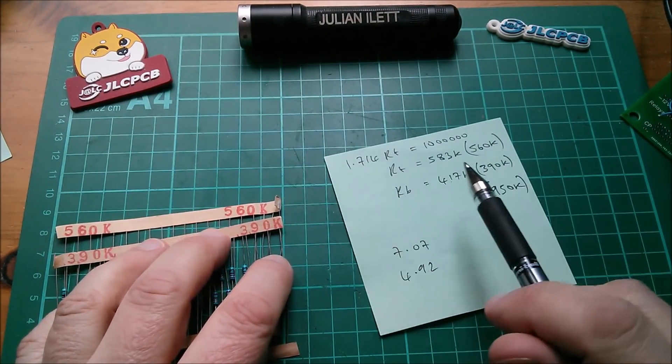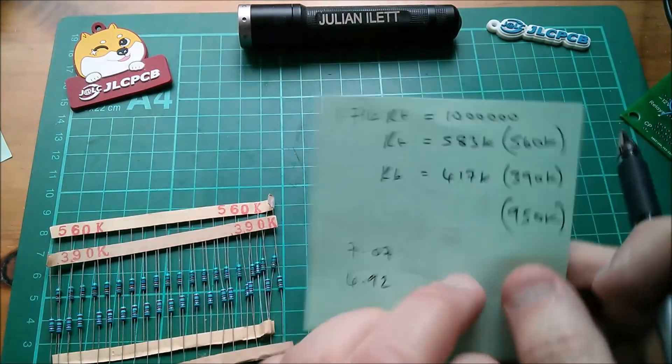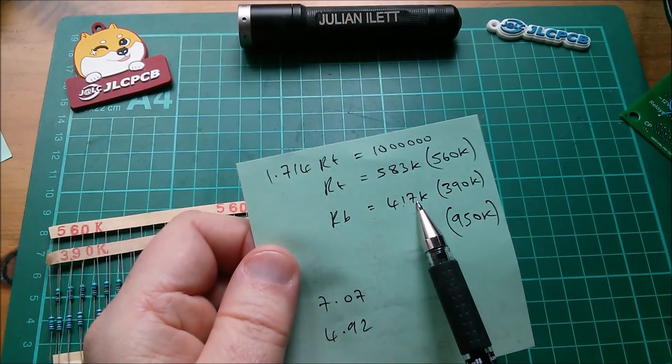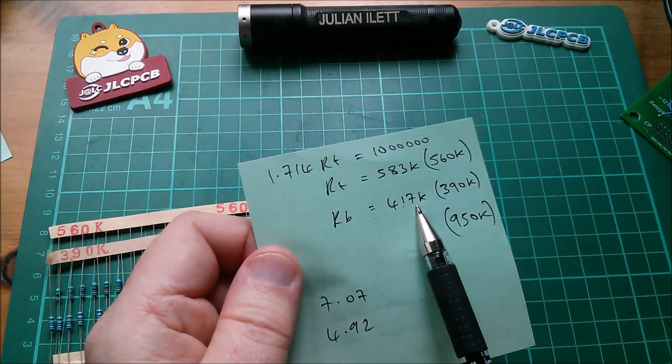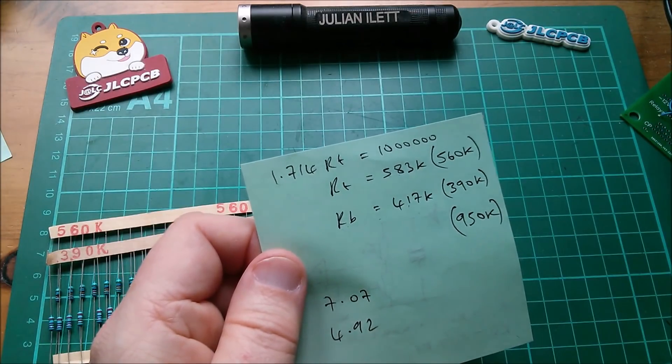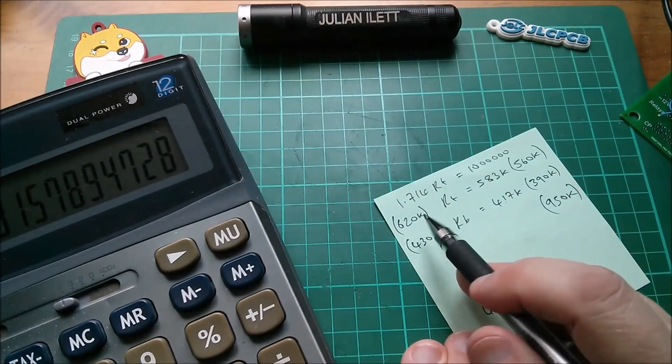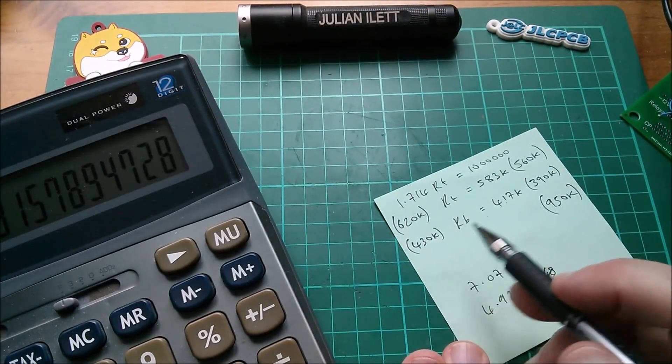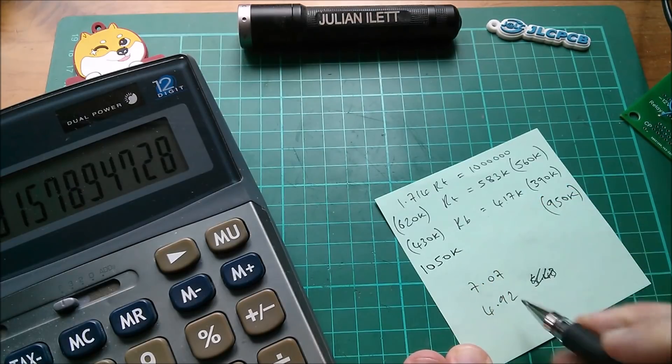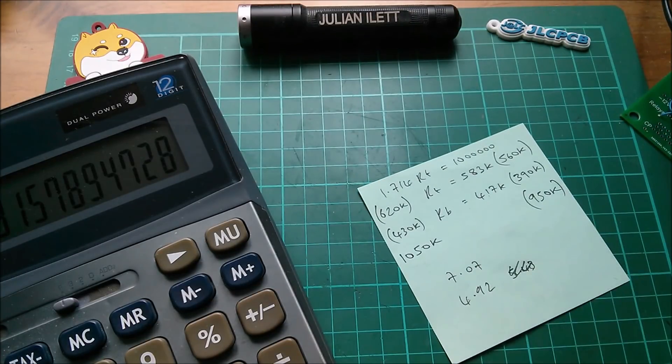I suppose I could try the ratio of resistors going above 1 megaohm, so I'd need to find something above 417, that could be 430, and the next one up from 583 is probably 620. So 620 plus 430, that looks like it goes the other way, doesn't it? So I think that's 1050k, so it's 50k over rather than 50k under.